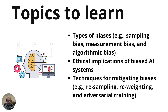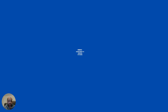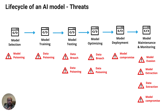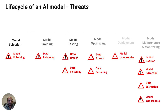Step three: learn about AI-specific attacks. As AI systems become more popular they become targets for malicious actors, just like how application security saw SQL injection and cross-site scripting emerge as applications grew popular. AI systems have many attacks: model evasion, model poisoning, data extraction, and inference attacks. These attacks occur throughout the entire AI model lifecycle — from model selection, training, and validation all the way through to production deployment.